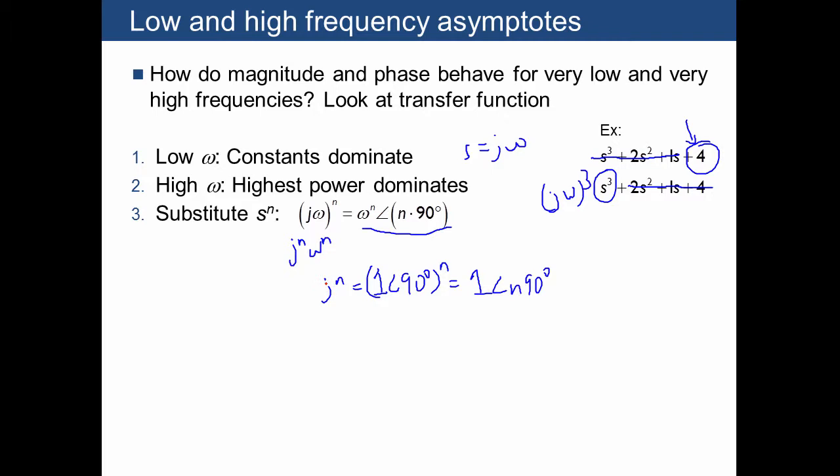So in other words, every time you have a J raised to some power, you're going to have an angle that's going to be n times 90 degrees.